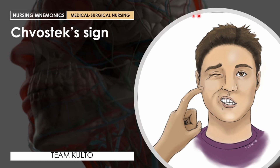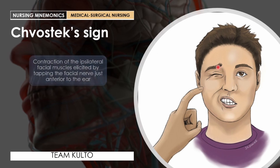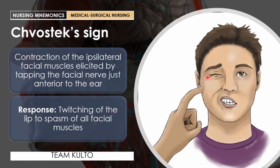Chvostek's sign is the contraction of the ipsilateral facial muscles elicited by tapping the facial nerve just anterior to the ear. The response you are looking for is twitching of the lip to spasm of all facial muscles — on the same side where you applied the stimulus, not the opposite side. That is your Chvostek's sign and Trousseau's sign, both signs of hypocalcemia.